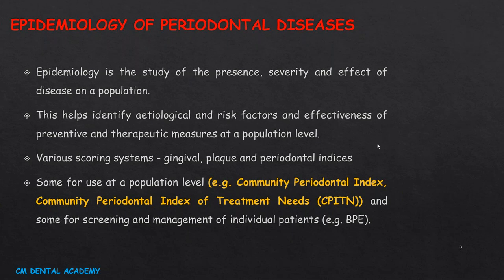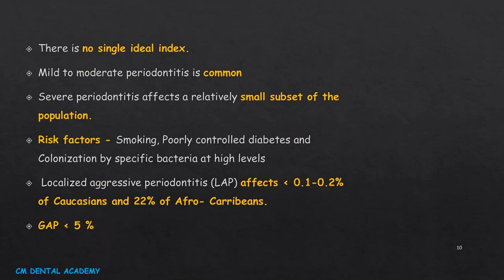There is no ideal index as such. Mild to moderate periodontitis commonly affects the general population. Severe periodontitis affects a relatively small subset. Risk factors include smoking, poorly controlled diabetes, and colonization by specific bacteria at high levels. Localized aggressive periodontitis affects less than 0.1–0.2% of Caucasians and up to 22% of Afro-Caribbeans, while generalized aggressive periodontitis affects less than 0.5% of the population.